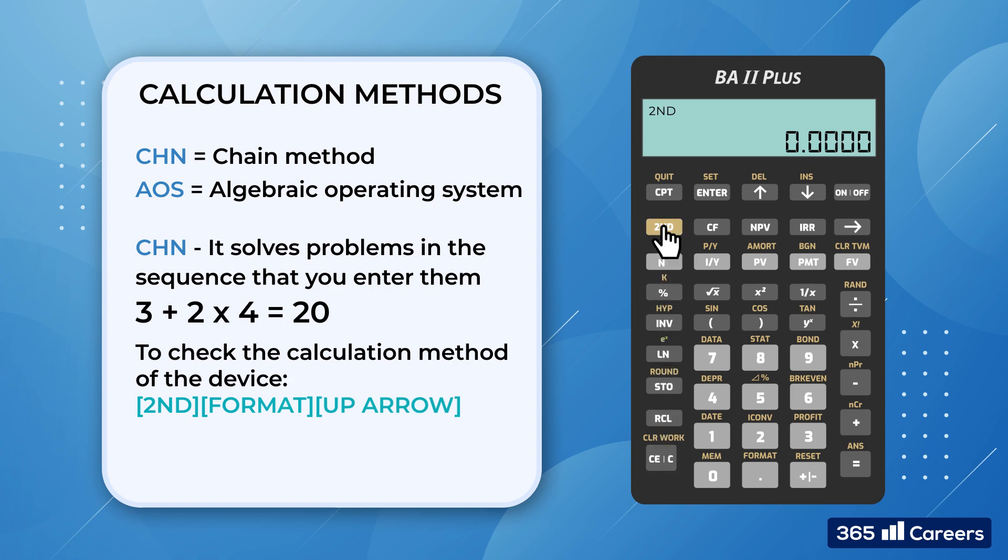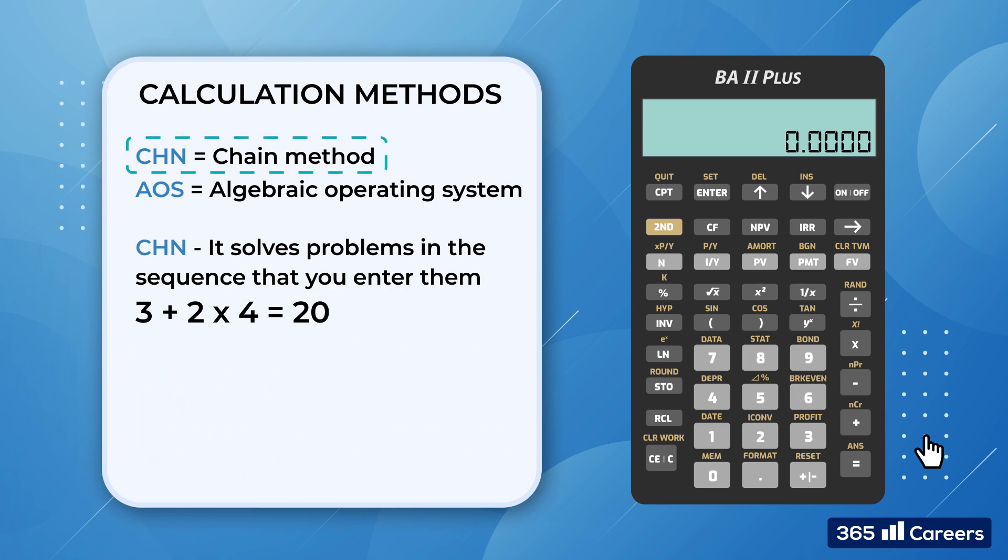To check which calculation method your device is using, press 2nd, format, and then the up arrow at the top of the keyboard. If you would like to change the mode, press 2nd, set, and then 2nd, quit, to exit the function. The calculation method to be chosen depends entirely on your preference. Most financial analysts use the chain method. That's also how we will use it throughout this course.